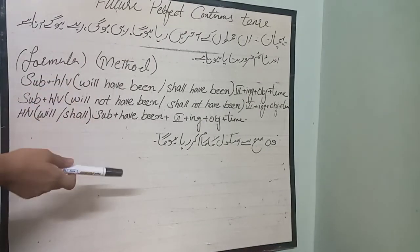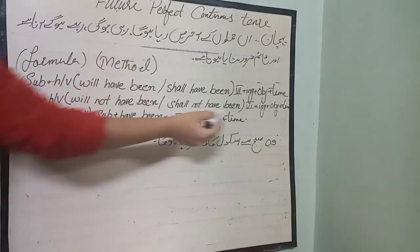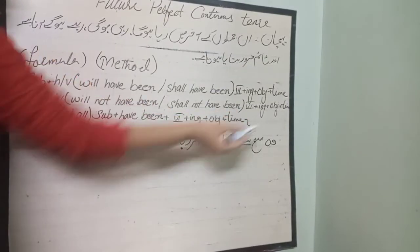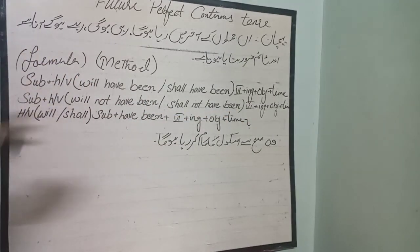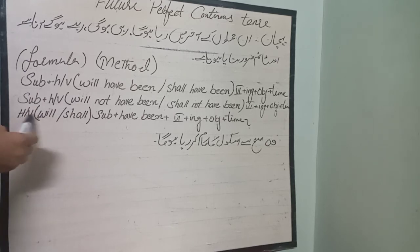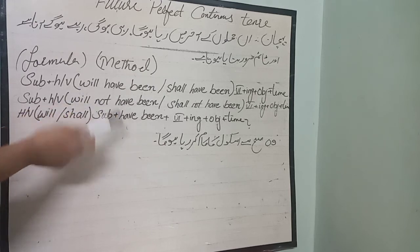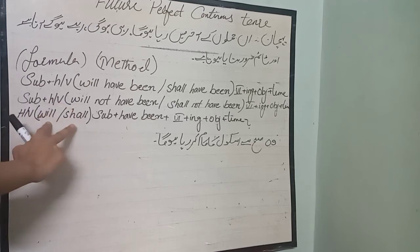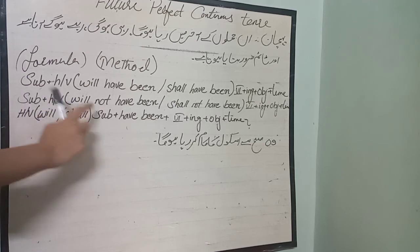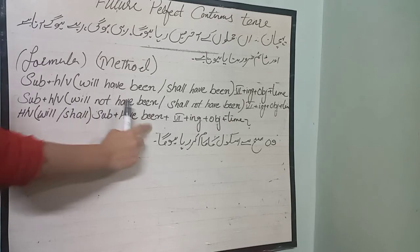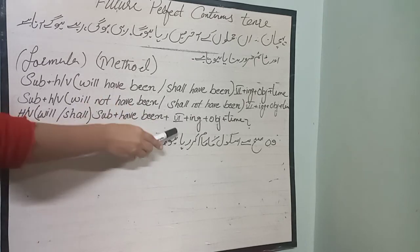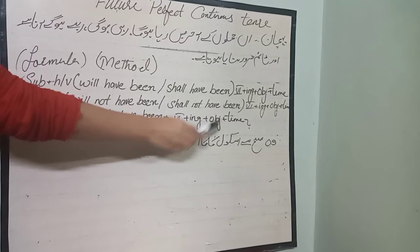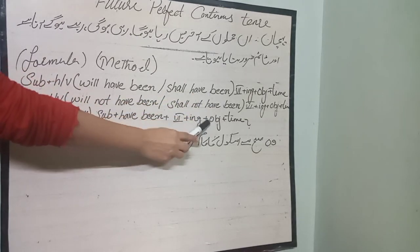Interrogative means question sentences — sentences which have question words: what, when, how. The helping verb will or shall comes first, then the subject, then will not have been, then first form plus -ing, plus object, plus time.